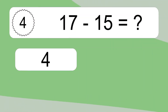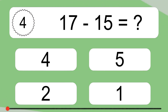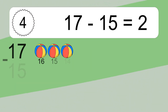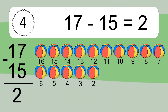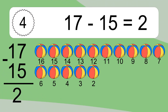17 minus 15 equals what? 17 minus 15 equals 2. Let's count it. 16, 15, 14, 13, 12, 11, 10, 9, 8, 7, 6, 5, 4, 3, 2.